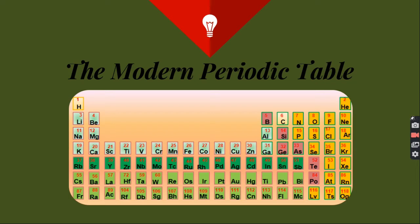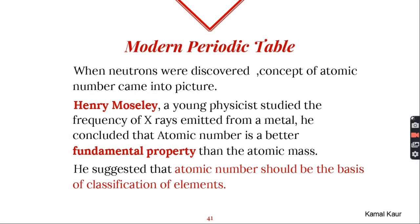One thing which was common in all three of them: they all tried to arrange elements on the basis of their atomic masses. At that time, only protons were discovered and there were no neutrons, so it was considered that the mass of an atom is due to the mass of the protons only — meaning atomic mass is the mass of protons.